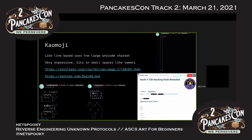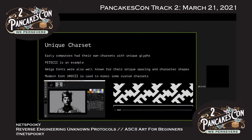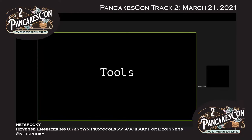Kaomoji can fit into small spaces like tweets. A great collection of kaomoji is actually the CIA Vault 7 leak, which for some reason has a Japanese-style faces page — some of the best kaomojis you can use as a starting point. Things with unique character sets are fun too — early computers had their own charsets with unique glyphs. Petscii is a great example; Amiga fonts were known for unique spacing and characters. The Unscii font mimics custom charsets by adding things like triangles and portions of triangles for interesting effects.